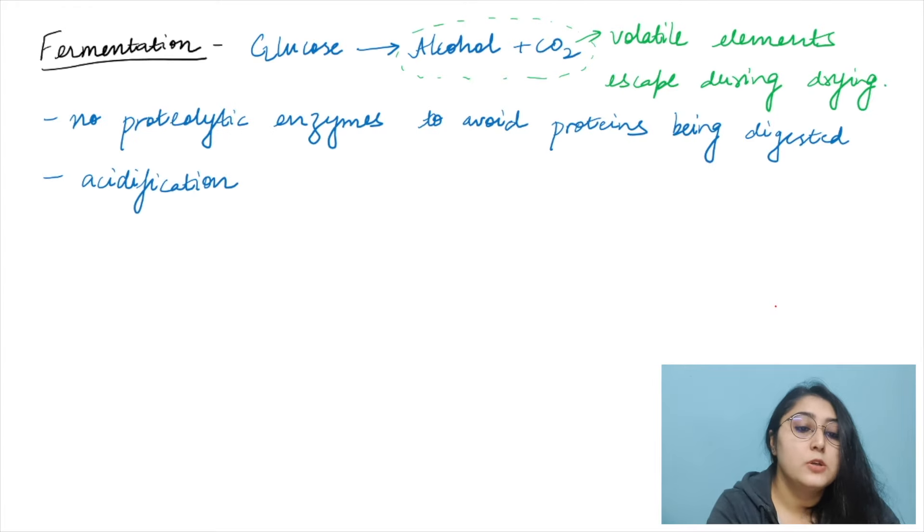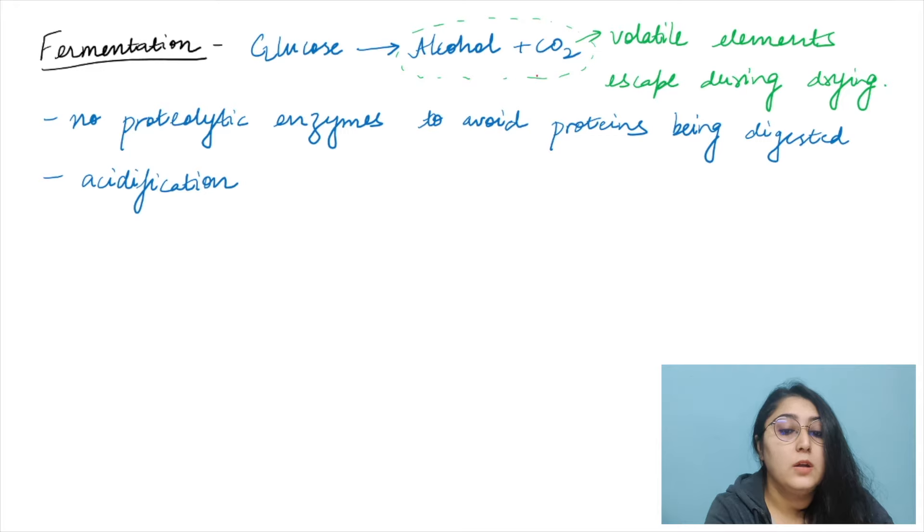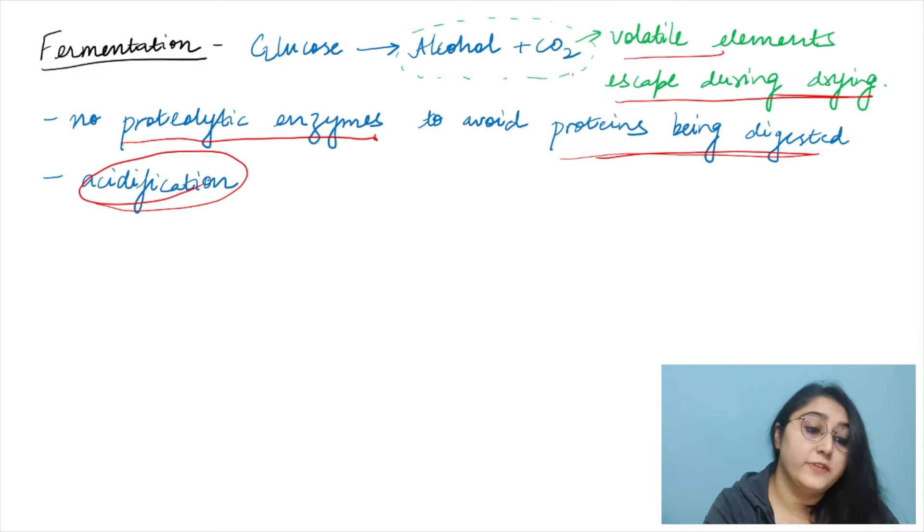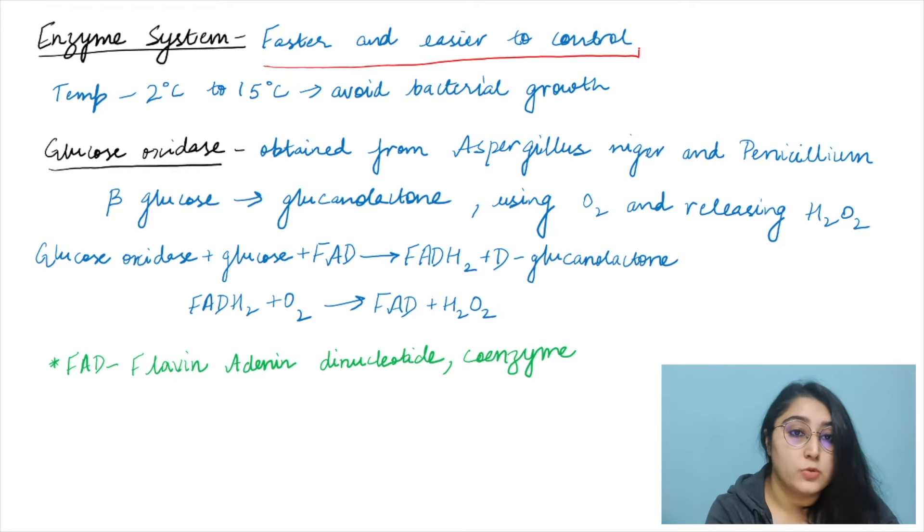In the fermentation process, glucose is converted to alcohol and CO2 which escape during drying. However, the bacterial or yeast strain must be free from proteolytic enzymes to avoid protein digestion, and fermentation can also cause acidification of the egg mass. Therefore, the enzyme system method is preferred at the commercial or industrial level.